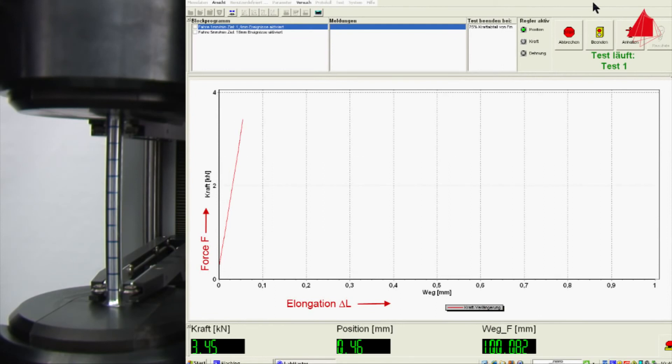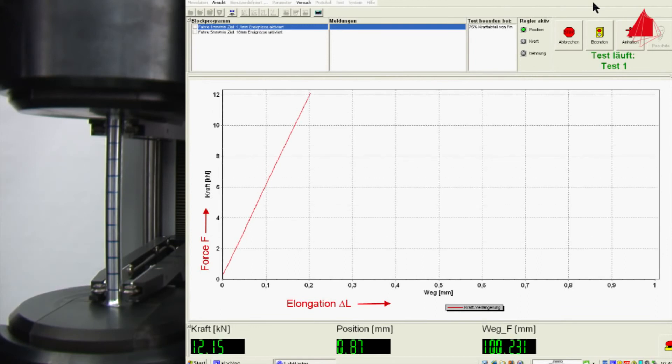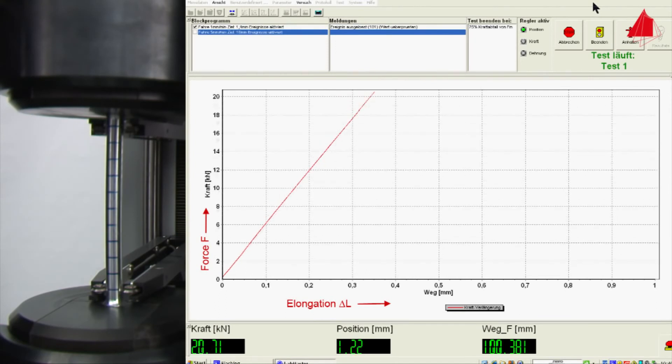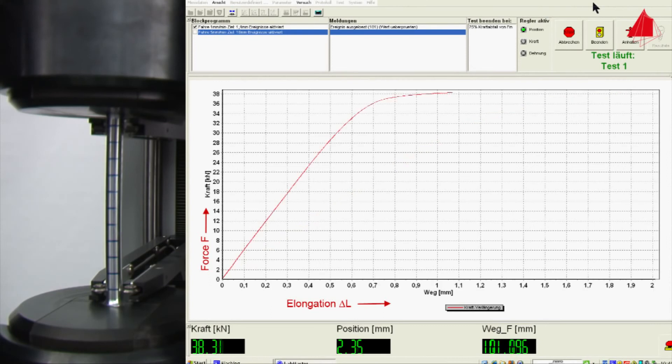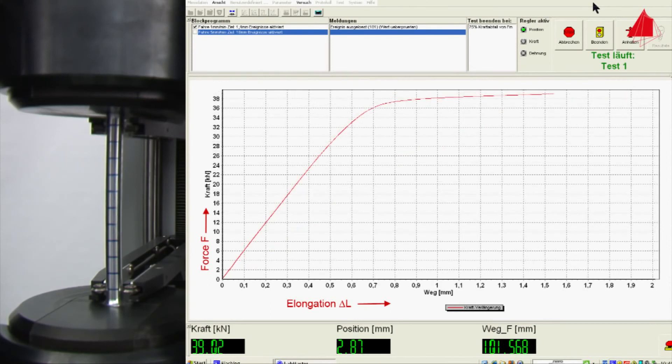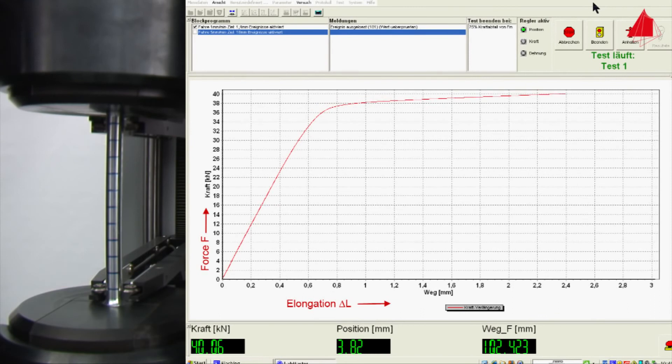The initial linear curve in the force-elongation diagram again shows the elastic behavior of the test material. But this time, the end of the elastic area is not revealed by a sudden drop of force or any distinct change. There is a smooth and gradual transition from linear elastic behavior to plastic deformation.